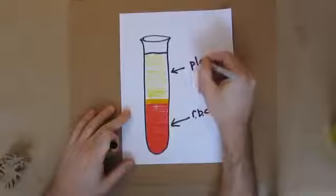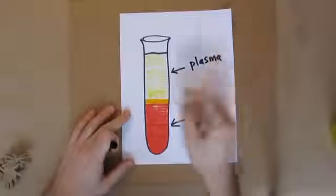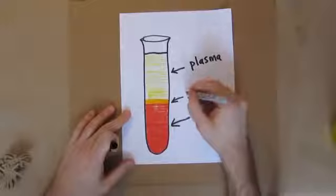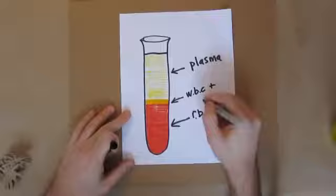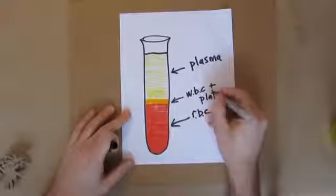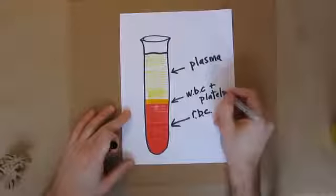They're very important and there are a lot of them. Then a little more than half the blood would be plasma. That's the yellowish liquidy part that carries everything. And the white blood cells and platelets make up a much smaller part of your blood.